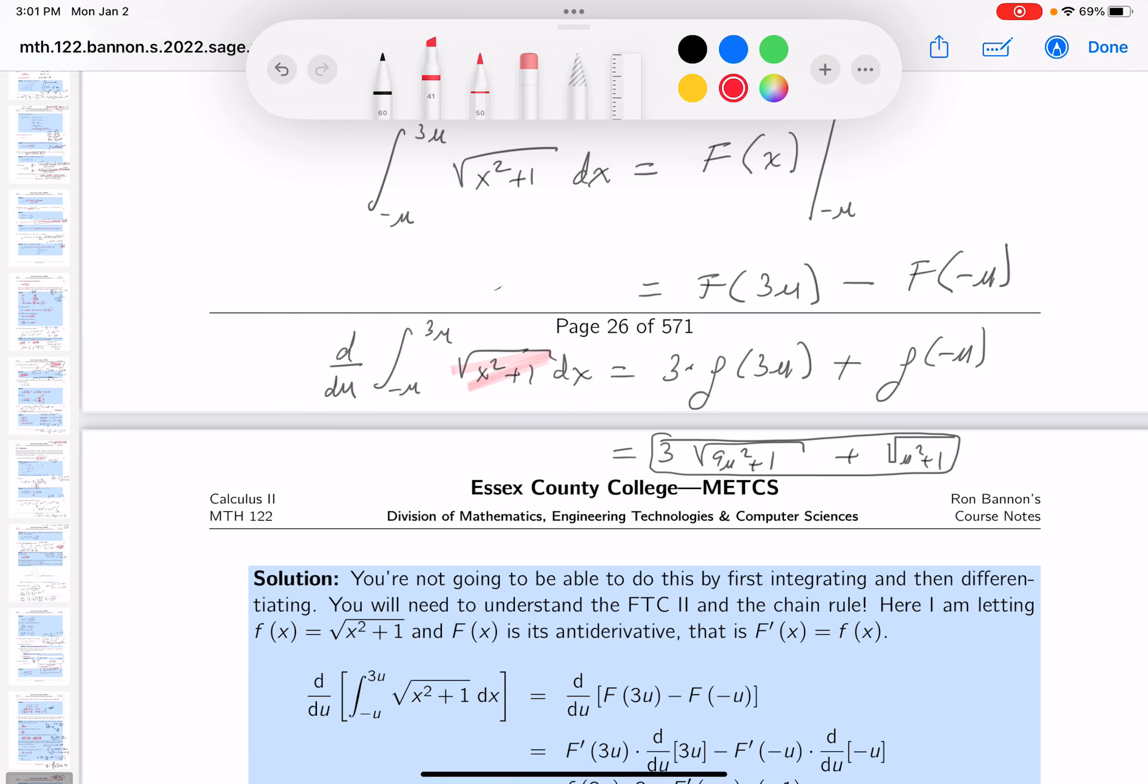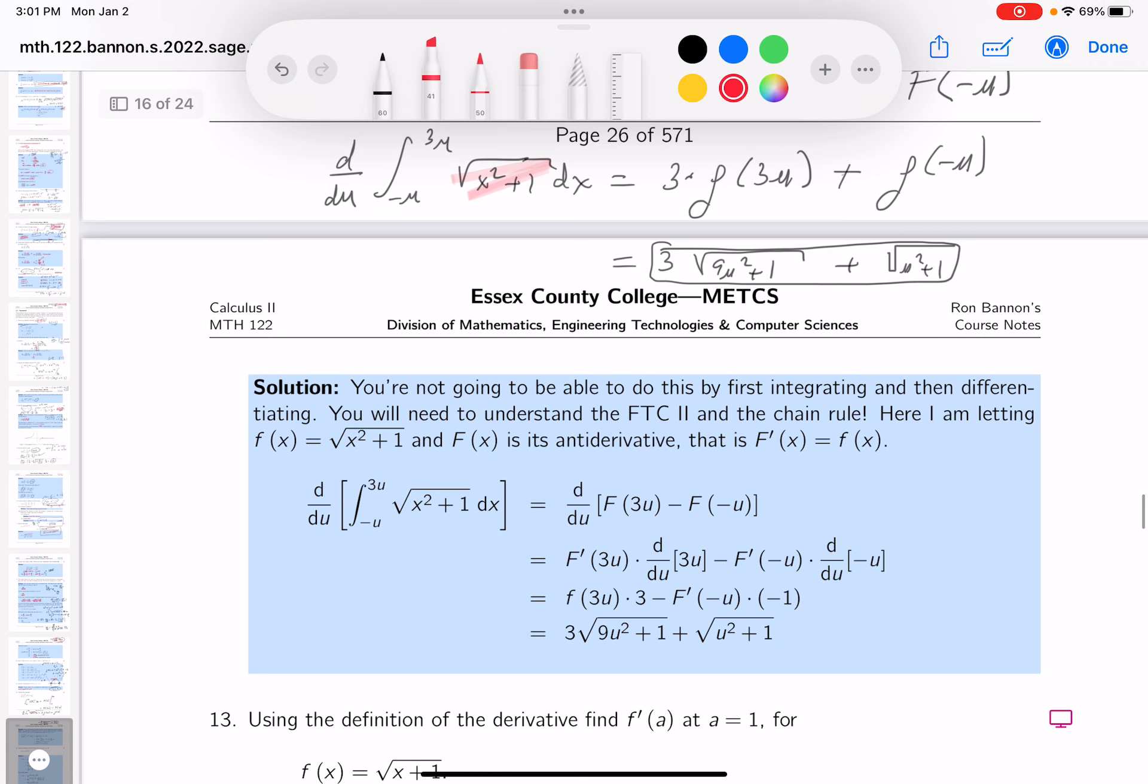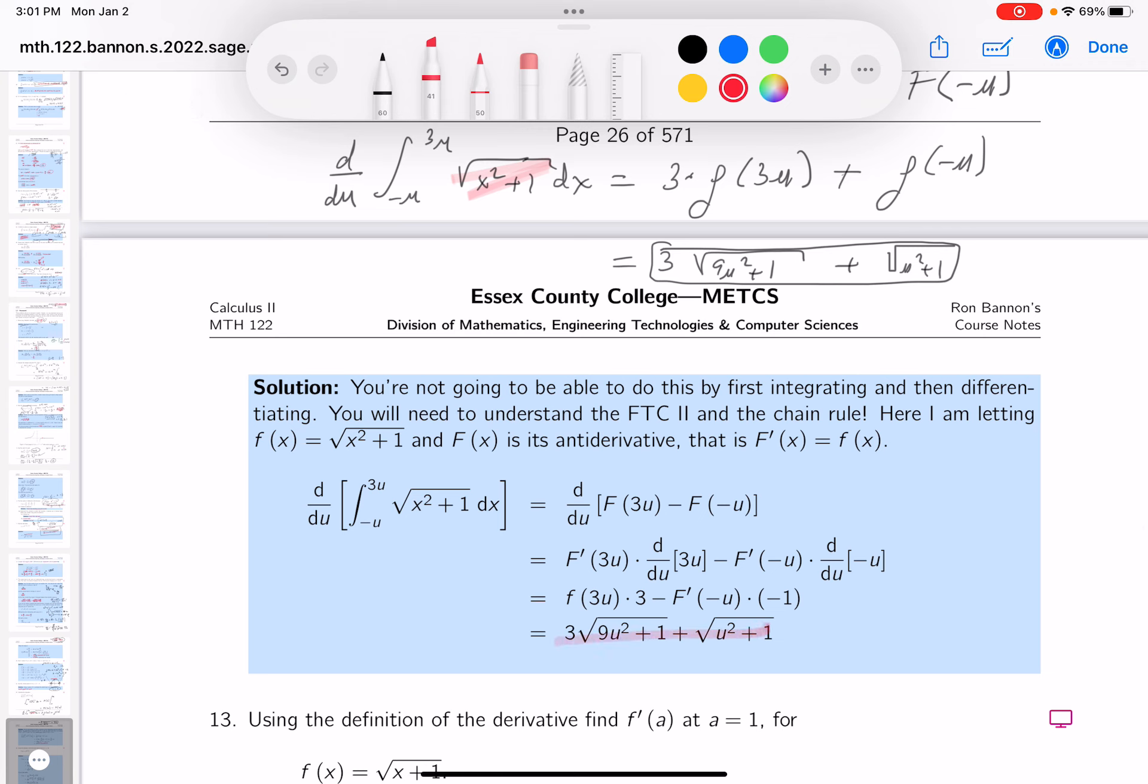And what I want to do is I want to look at the key and see if we got the answer. All right, now again we're looking at this, and we're looking at this over here, and we get 3 times the root of 9u squared plus 1. And yeah, we did. Okay, this is good. Thank you.